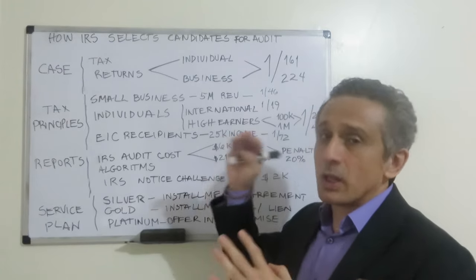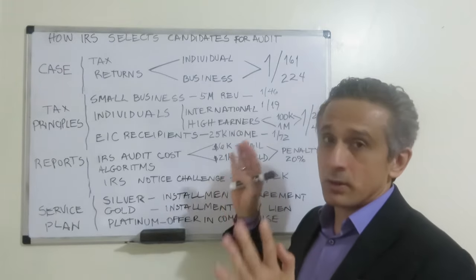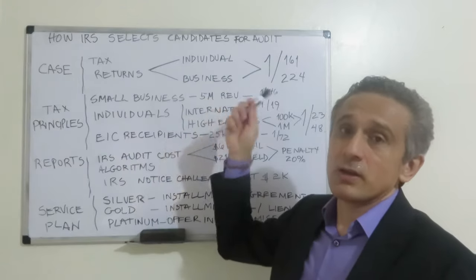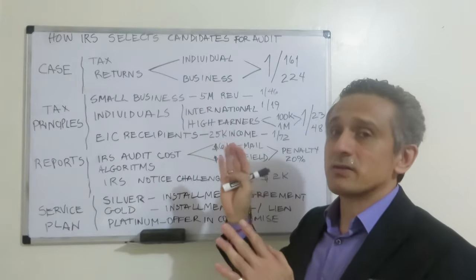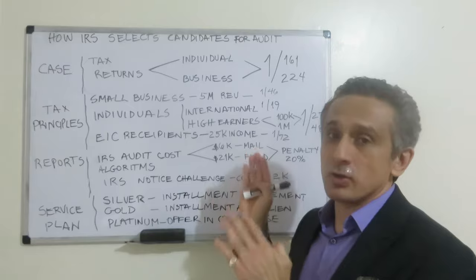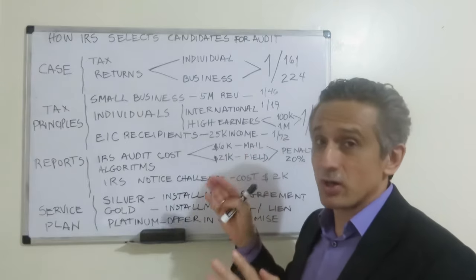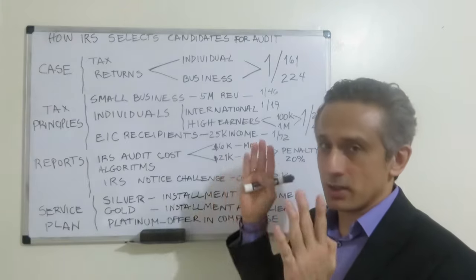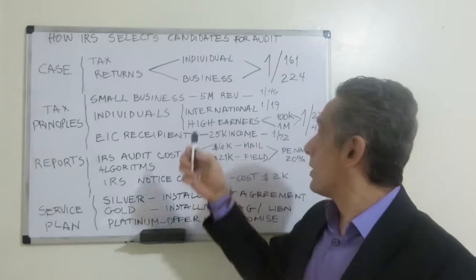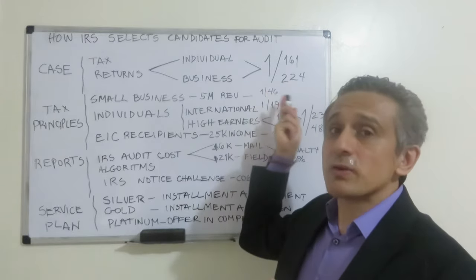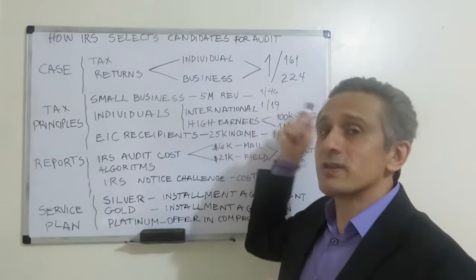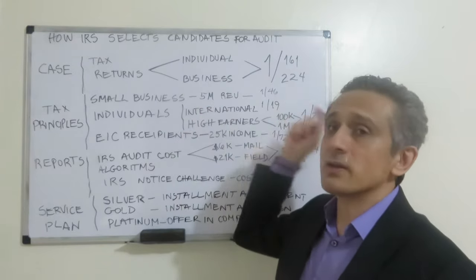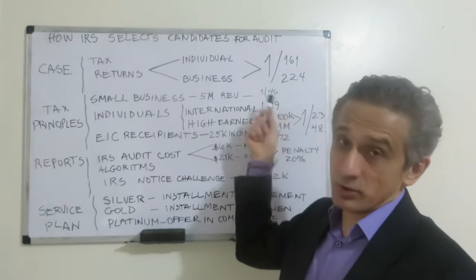In terms of specific categories for auditing, there are three elements to pay attention to. The first one is small businesses, classified by the IRS as businesses up to $5 million in reporting. For every 46 reports given to the IRS, one small business will be audited.